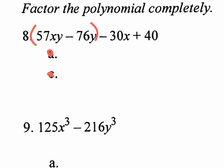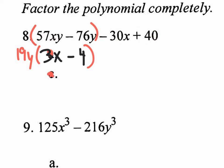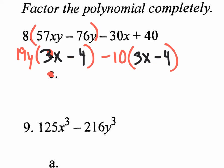Now look at the second group: negative 30X plus 40. What can we pull out? A negative 10. And that's great, because if we pull out a negative 10, what's left over is positive 3X minus 4. As you can see, there's the binomial 3X minus 4 in both the first group and the second group. So we're going to pull out what's in common.